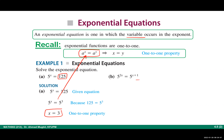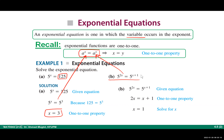Similarly, in part b, we have the same bases. The bases are the same and two expressions equal to each other, so we can directly apply this property. We have the exponents equal to each other. You have a linear equation — solve it for x equals 1. Of course, it is better to check your solution. If you replace x by 1, you will get a true statement.